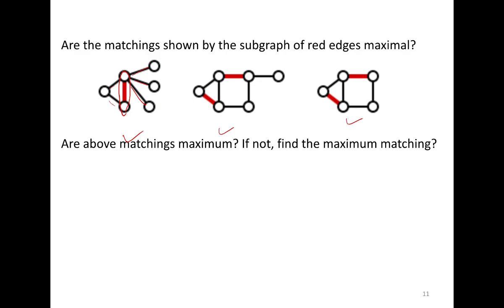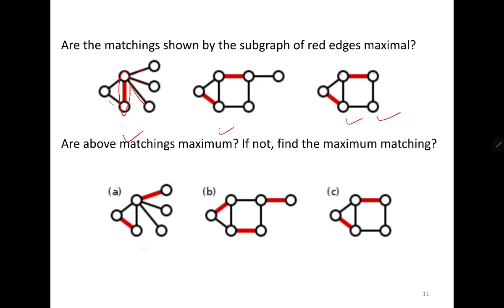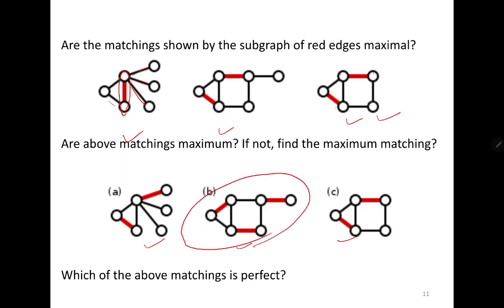Are the following matchings maximum? The third one is maximum because its graph has order five, so at most two independent edges can exist. In the middle and first graphs, we still have the possibility to find a larger matching. Among all maximum matchings, the perfect matching is the one that covers all vertices with no unmatched vertex.